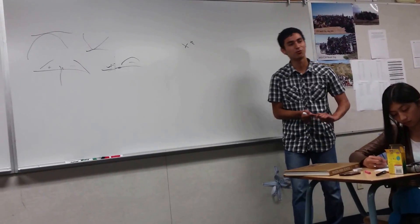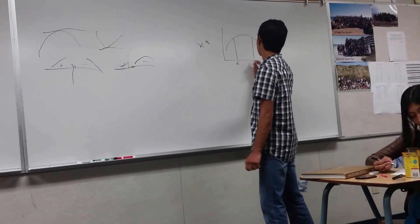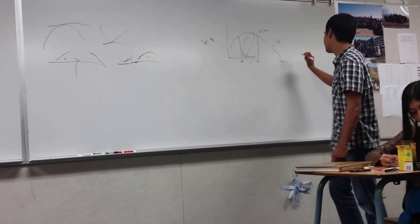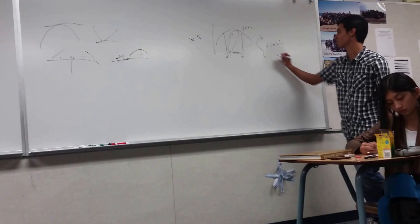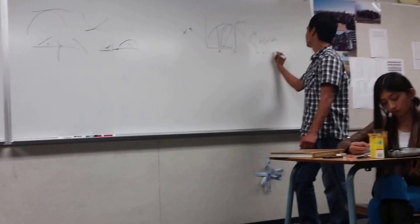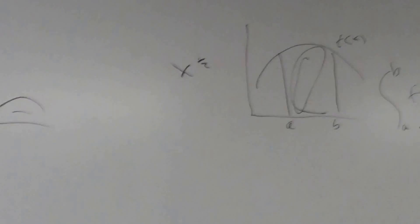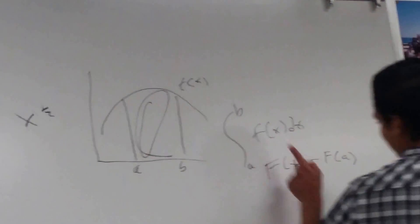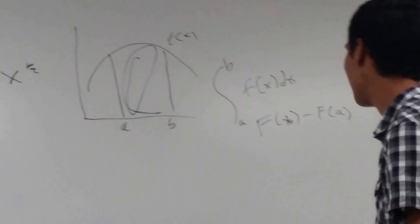In talking about integrals, we're going to look at what is known as the fundamental theorem of calculus. Suppose I have a graph and I have the integral from a to b of the function f(x). The fundamental theorem of calculus tells us that the area of that region is simply equal to the definite integral of f(x) from a to b with respect to x. And what that yields is capital F(b) minus capital F(a) — the anti-derivative evaluated at b minus the anti-derivative evaluated at a.